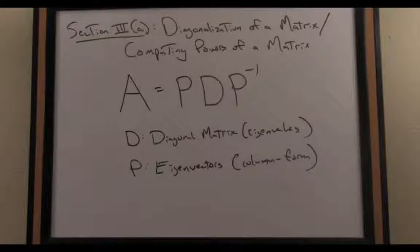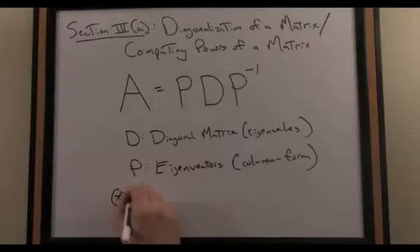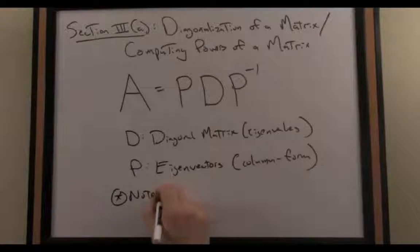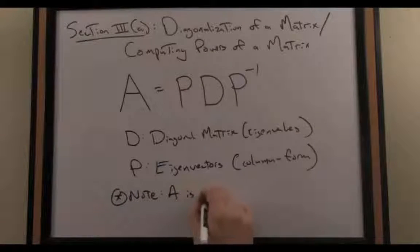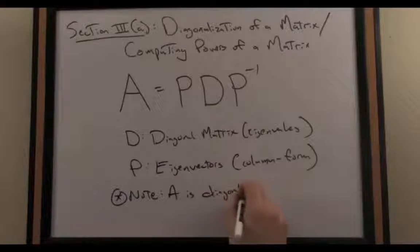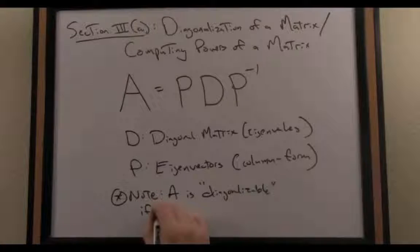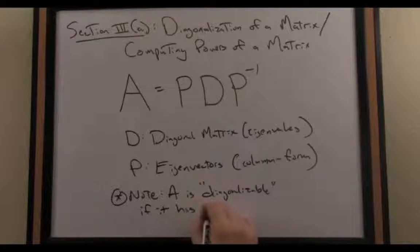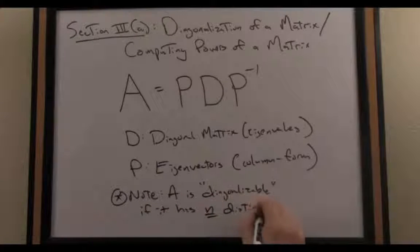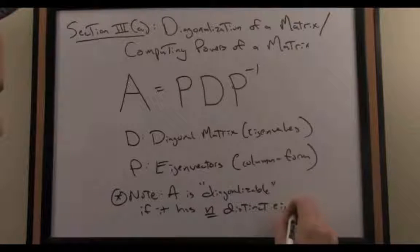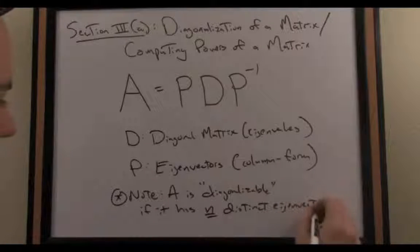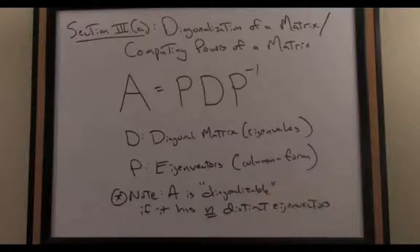To diagonalize a matrix, we need n distinct eigenvectors for an n by n matrix. That is an important note here. So note, A is diagonalizable if it has n distinct eigenvectors. And the reason we need that criterion met is